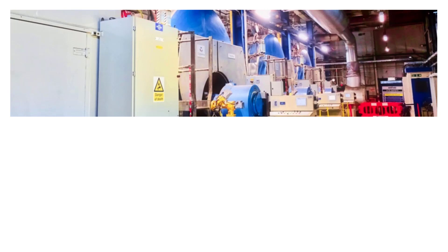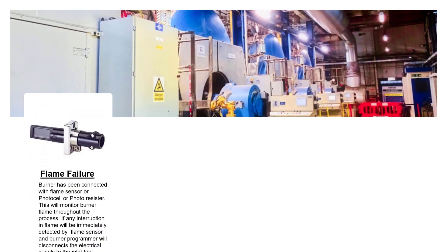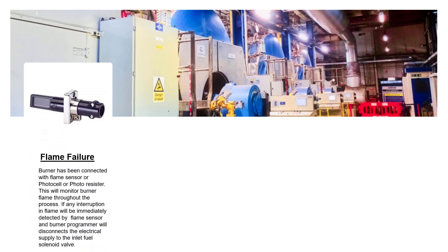Let's discuss electrical safeties one by one in detail. Flame failure: the burner is connected with a flame sensor, photocell, or photoresistor. This will monitor the burner flame throughout the process. If any interruption in the flame is detected by the flame sensor, the burner programmer will disconnect the electrical supply to the inlet fuel solenoid valve.